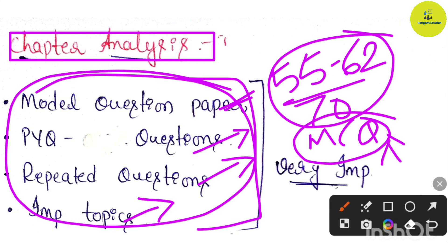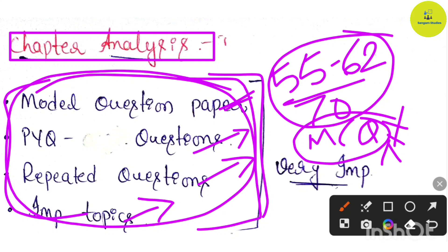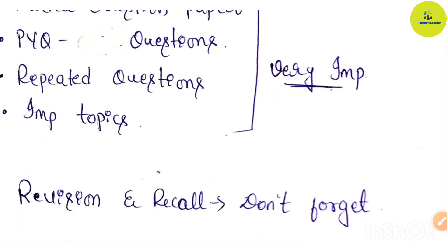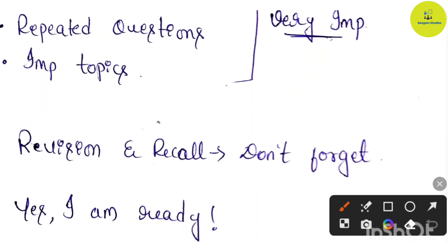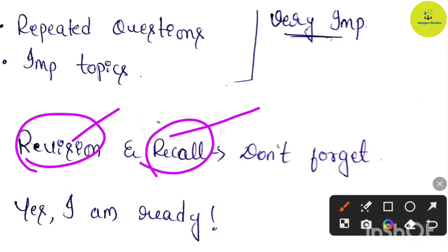If you complete the first chapter fully, it will help you answer questions and score 70 out of 70. Last but not the least is revision and recall — make sure you revise regularly. This is the complete 60-day hard challenge strategy.